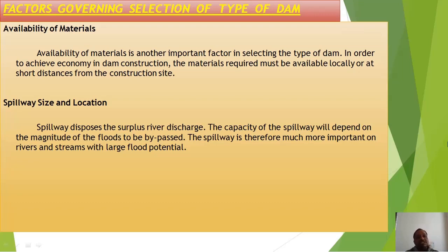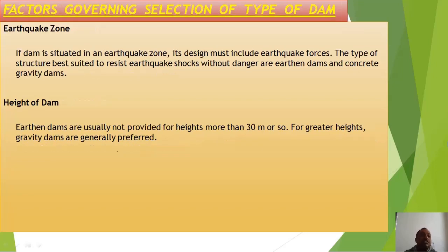Spillway disposes of surplus river discharge. The capacity of the spillway depends on the magnitude of the flood to be bypassed, and is more important on rivers with large flood potential. In an earthquake zone, the dam design must incorporate earthquake forces — earthen dams and concrete gravity dams are best suited to resist earthquake shock. Earthen dams are usually not provided for heights more than 30 meters; for greater heights, gravity dams are generally preferred.